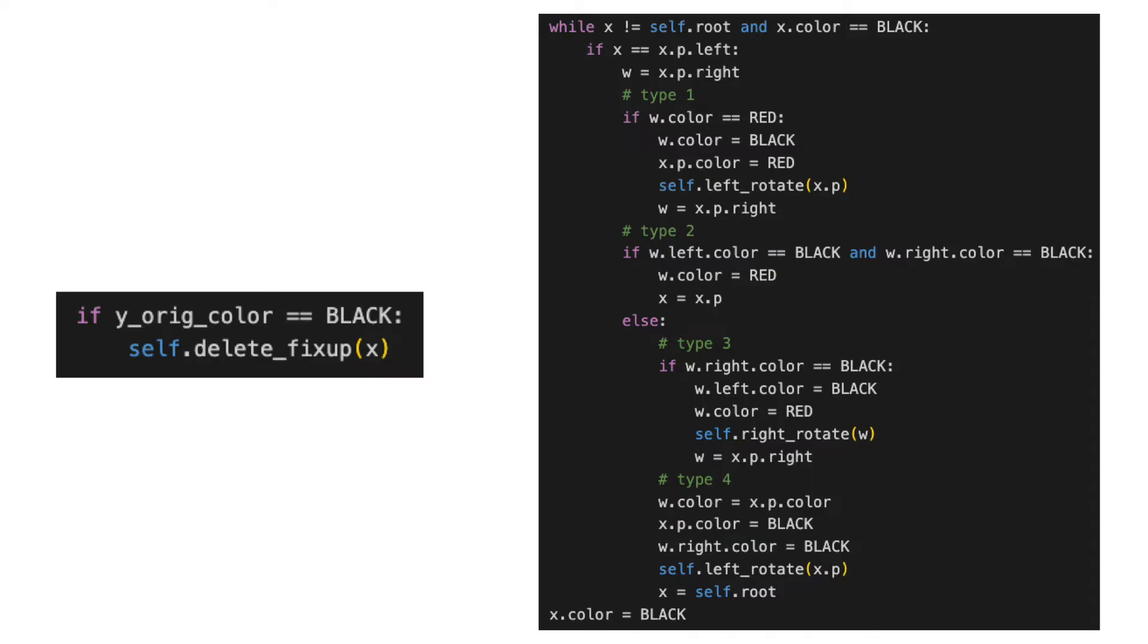I also want to point out that we call the function when the original color is black, and we also only execute the fixes when the node that is passed, x, is black. And lastly, at the very end you can see that whatever node x is pointing to by the end of the function, we color it black.